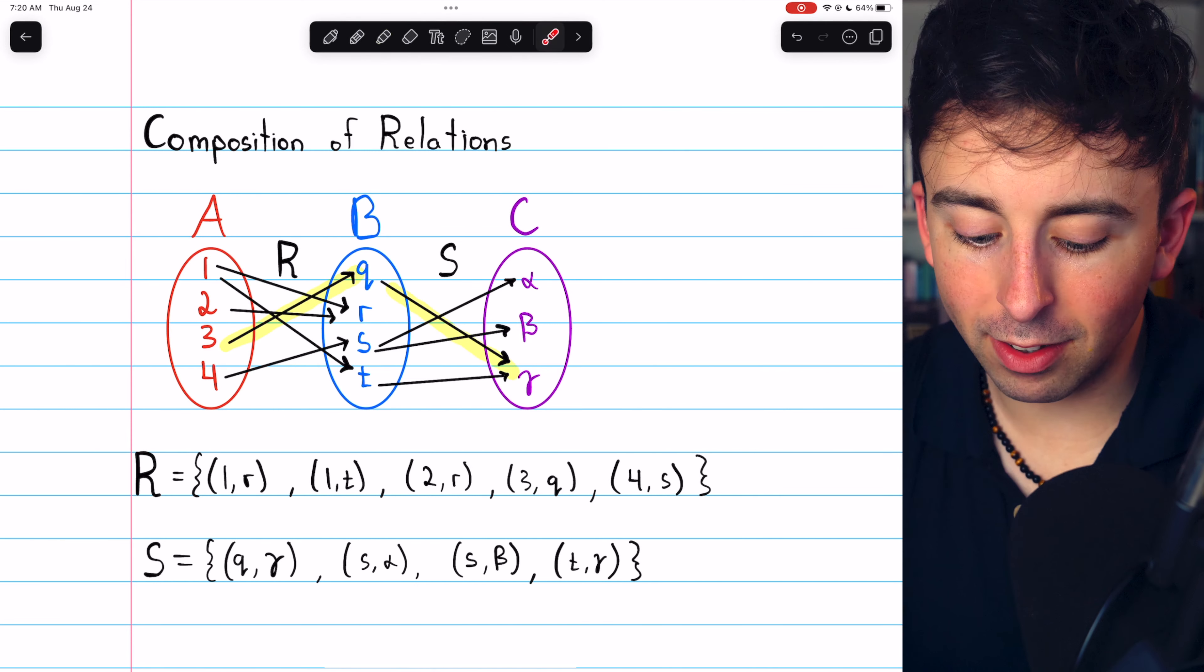3 relates to gamma, because the relation R relates 3 to Q, and then S relates Q to gamma. So in total, under the composition, 3 is related to gamma.